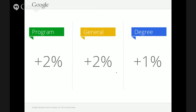Breaking down non-brand queries into three categories: program terms (like nursing, business), general terms (online education, online course, online college), and degree terms (where the query indicates level of education sought — PhD, bachelor's, associate's degree, etc.). The order reflects volume: program terms have the highest volume, followed by general, then degree. The percentages shown are growth rates, and there's still room to invest in these upper-funnel terms while brand demand is flat.